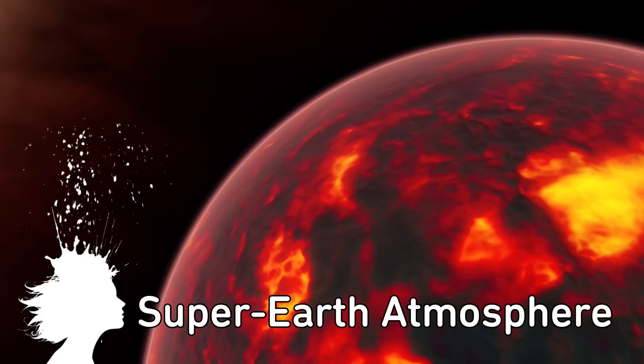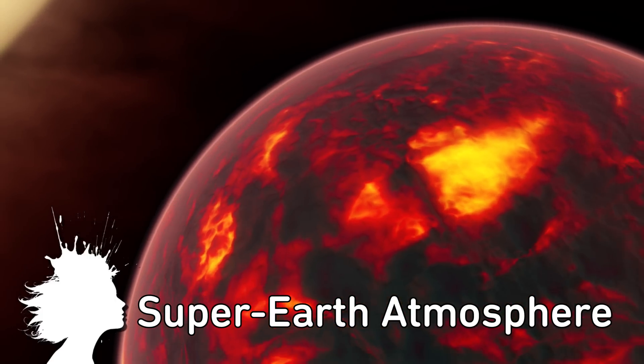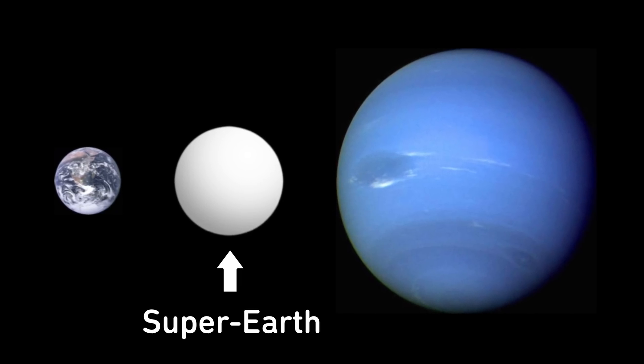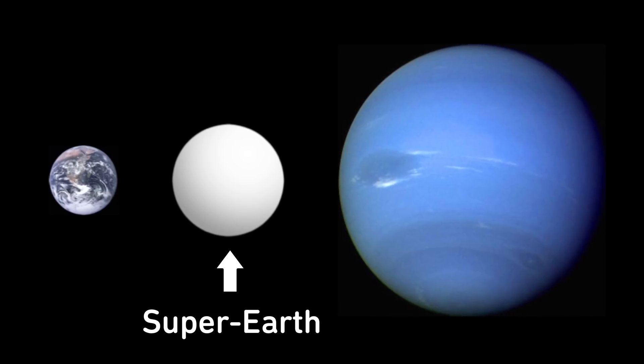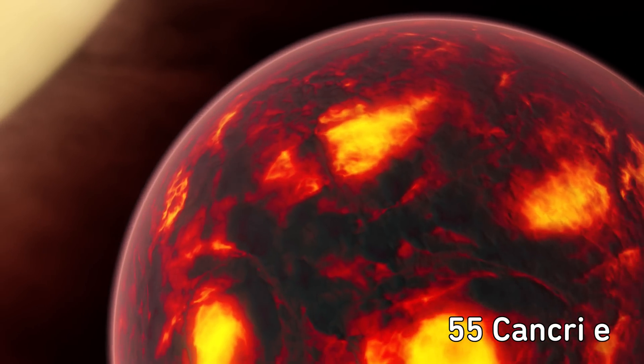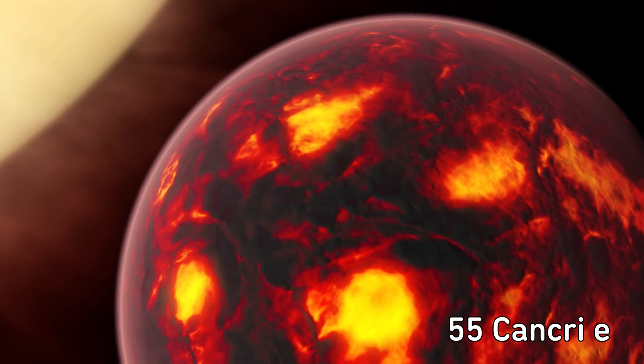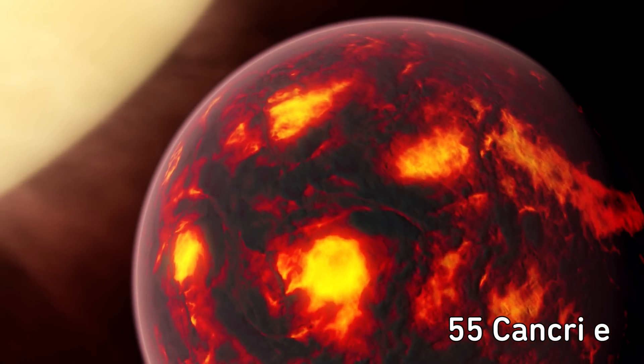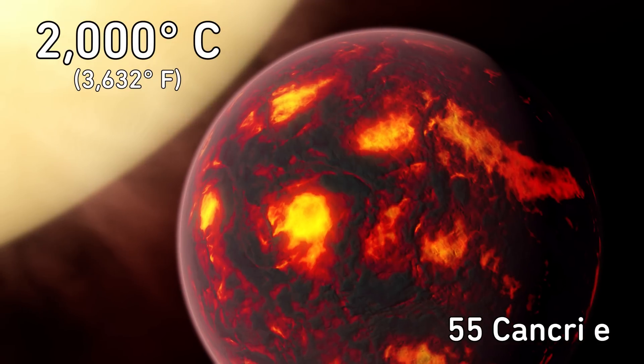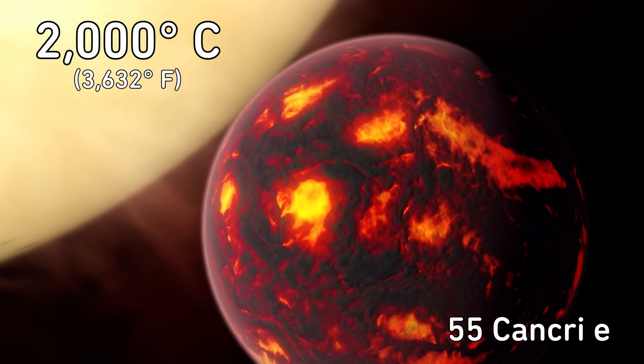Here's an artist's rendering of the first successfully analyzed atmosphere of a super-earth. A super-earth is a planet outside of our solar system with a mass higher than Earth's but much lower than gas giants like Neptune. Researchers from the University College London recently analyzed 55 Cancri E's atmosphere and discovered it consists mainly of helium and hydrogen. And due to orbiting so close to its sun it's at least 2000 degrees there.